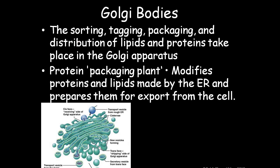The sorting, tagging, packing, and distribution of lipids and proteins takes place in the Golgi apparatus — the protein packing plant. It modifies proteins and lipids made by the endoplasmic reticulum and prepares them for export from the cell. Golgi bodies are flattened sac-like structures with curved endings. In plants, they have an additional role in synthesizing polysaccharides.